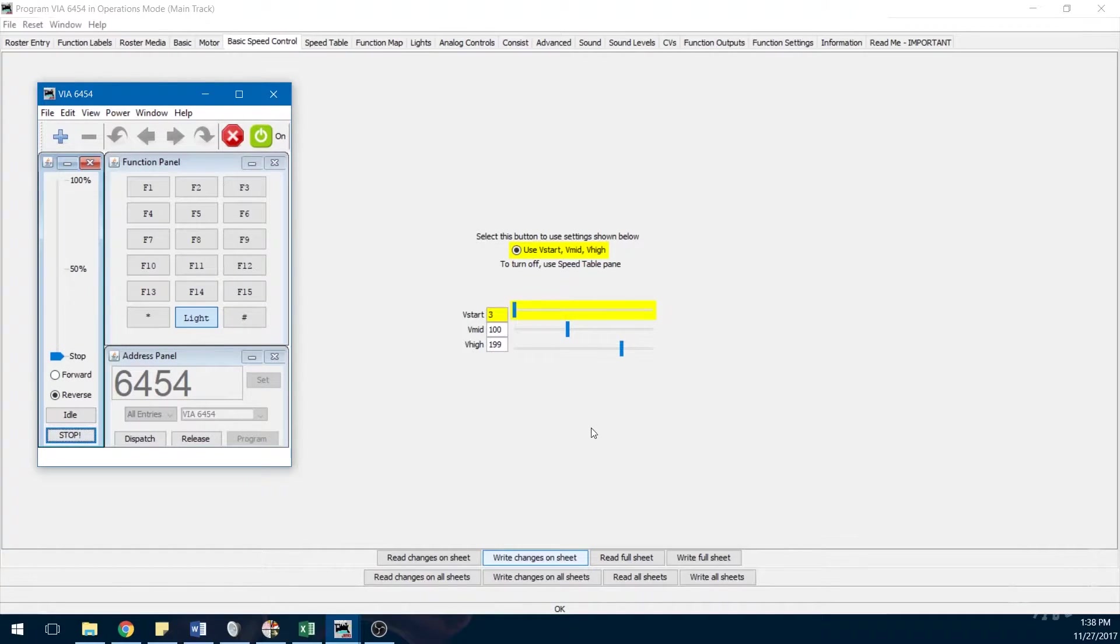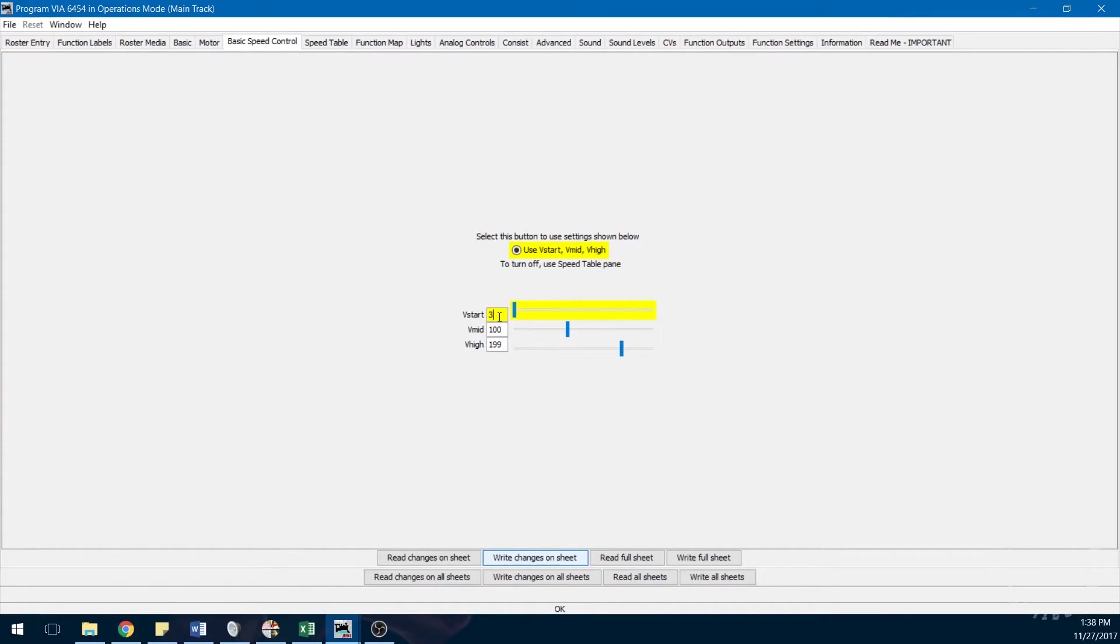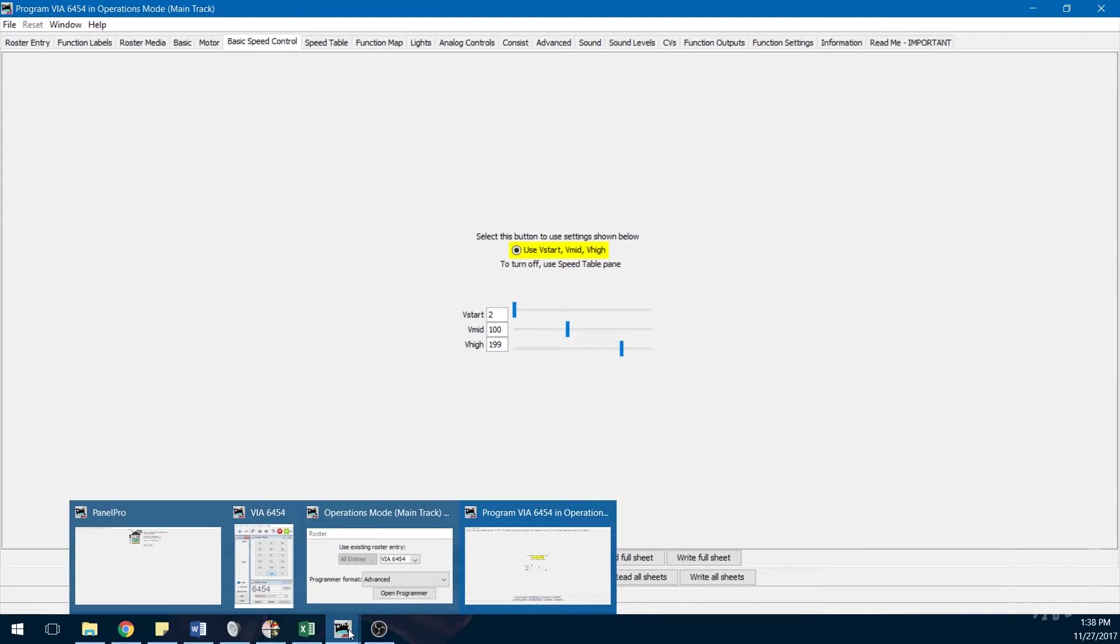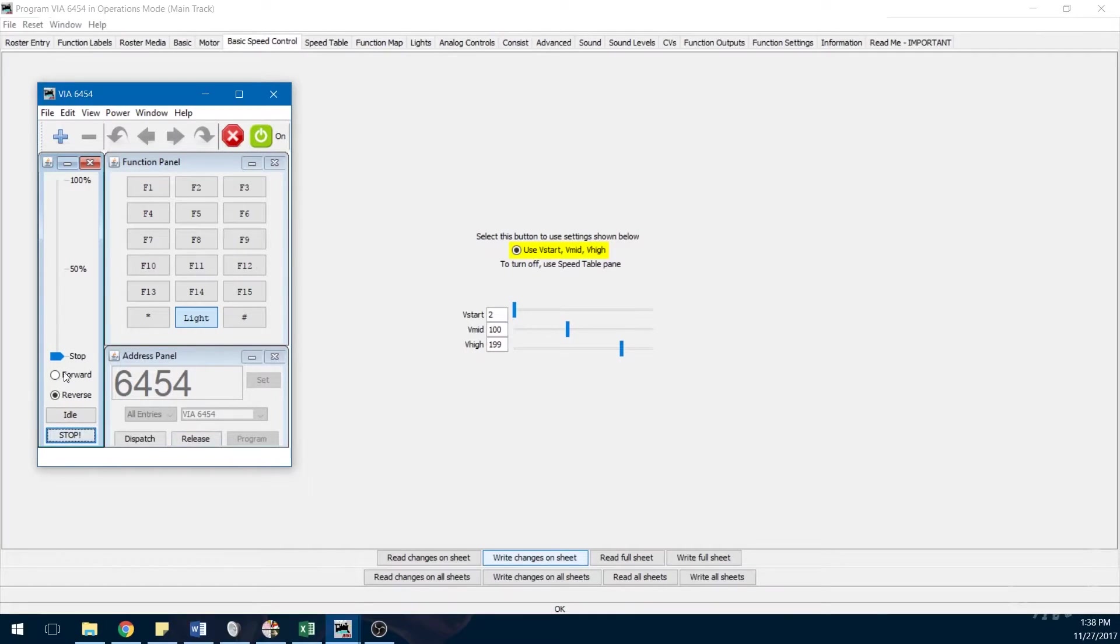Finally, set CV2 to the lowest value that will get the locomotive moving when you set the throttle to 1%. On most ESU decoder equipped locomotives with the back EMF enabled, this value is 2 or 3. On other decoder brands, this value may be different.